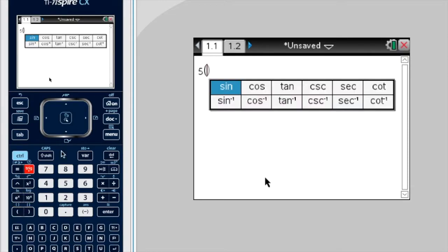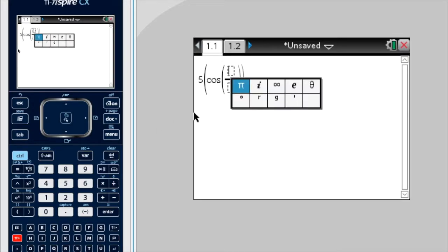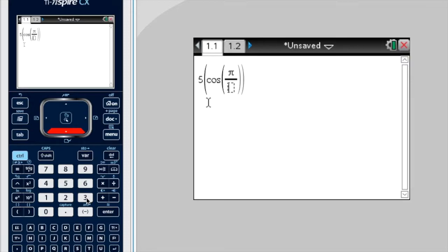cos, so we press trig and choose cos, and let's say our angle is pi on 3. So I might use a fraction. So control, divide, press pi on 3.